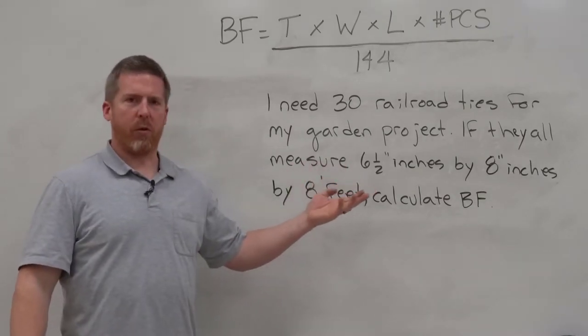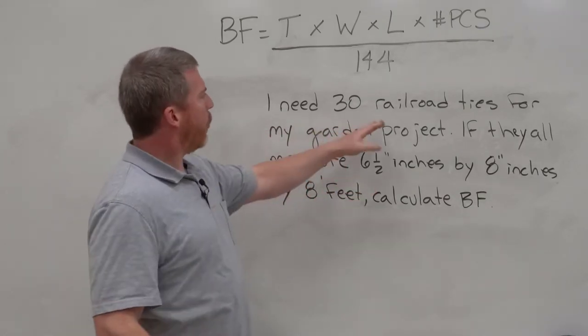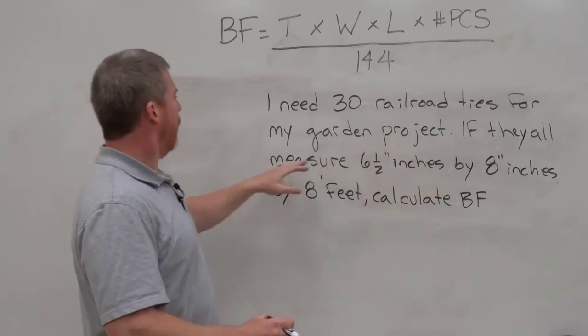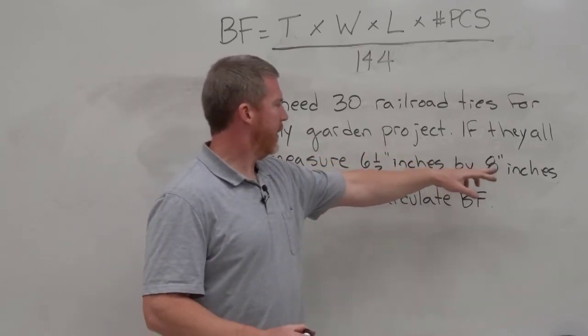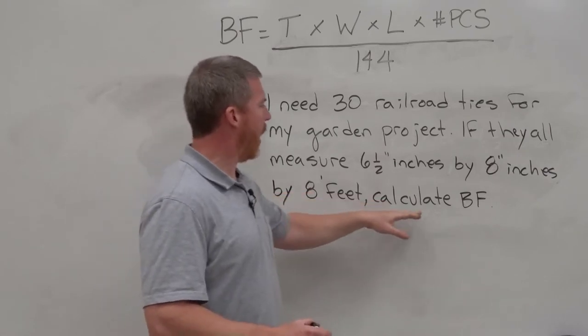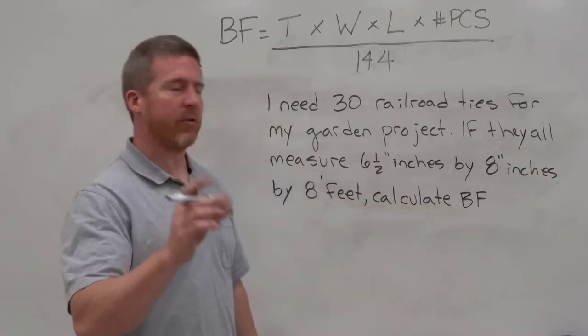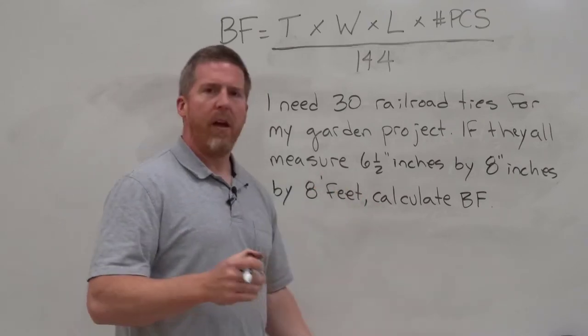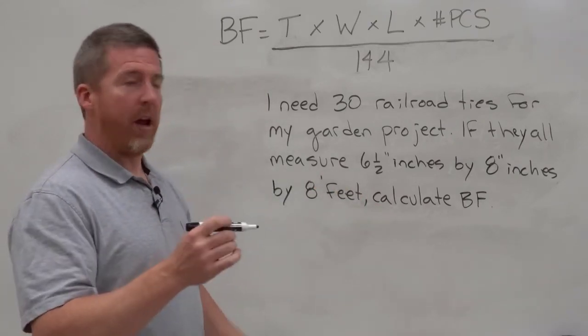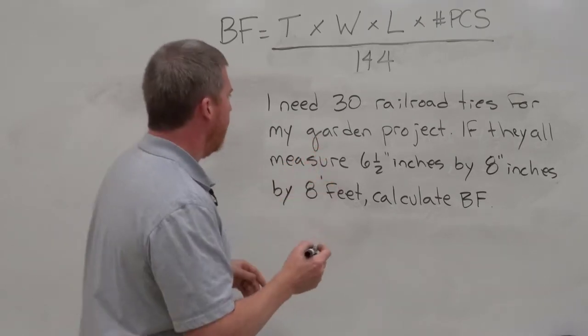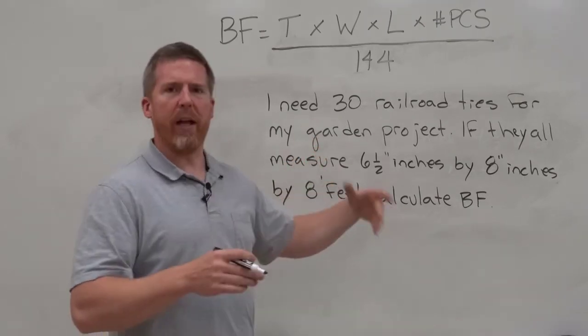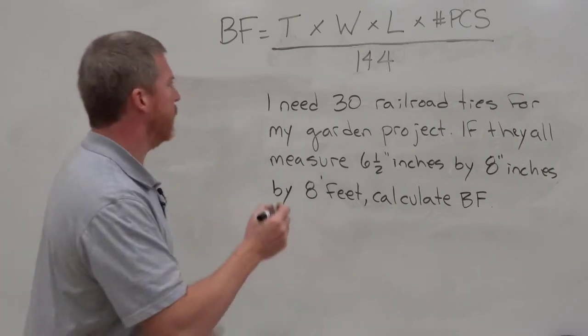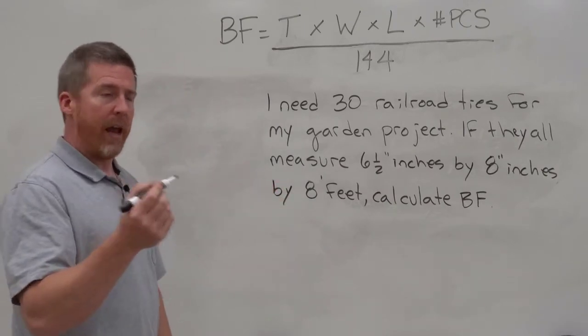And the total amount I'm getting is $68.53. And that would be my final answer for that. So keep track of exactly what the question is asking, whether it's board feet or it's a value or it's money. So you know where to go and to take that last step to get it. Our next word problem, our story problem, I need 30 railroad ties for my garden project. If they all measure six and a half inches by eight inches by eight feet long, calculate the board feet.